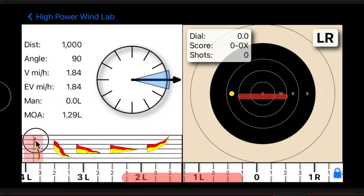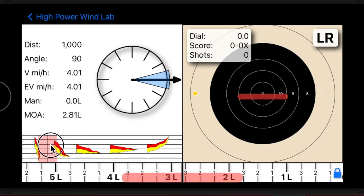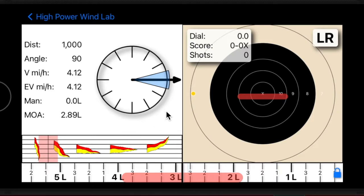In high wind conditions, you cannot rely on holdover alone. Once a condition exceeds a practical holdover aim point, High Power Wind Lab compensates by adding a dialed correction needed to keep the aim point on the target on the upside of the condition.